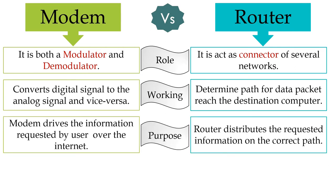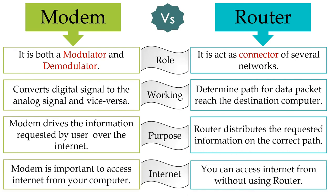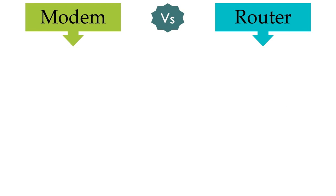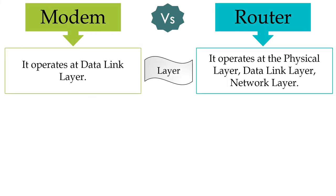A modem is there to bring information from the internet to your network, and a router distributes that information to the specific computer in the network that has requested it. A modem is essential to connect your computer or network to the internet, whereas a router is only to direct the traffic of packets to specific devices. A modem operates only on the data link layer, whereas a router operates on the physical layer, data link layer, as well as the network layer.